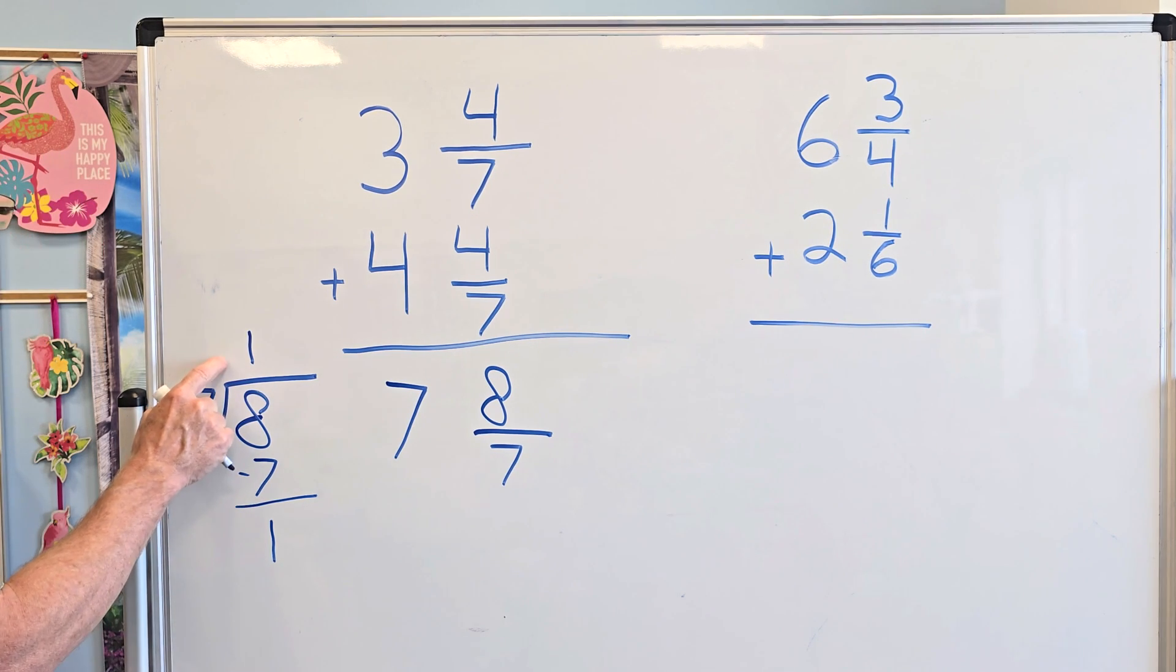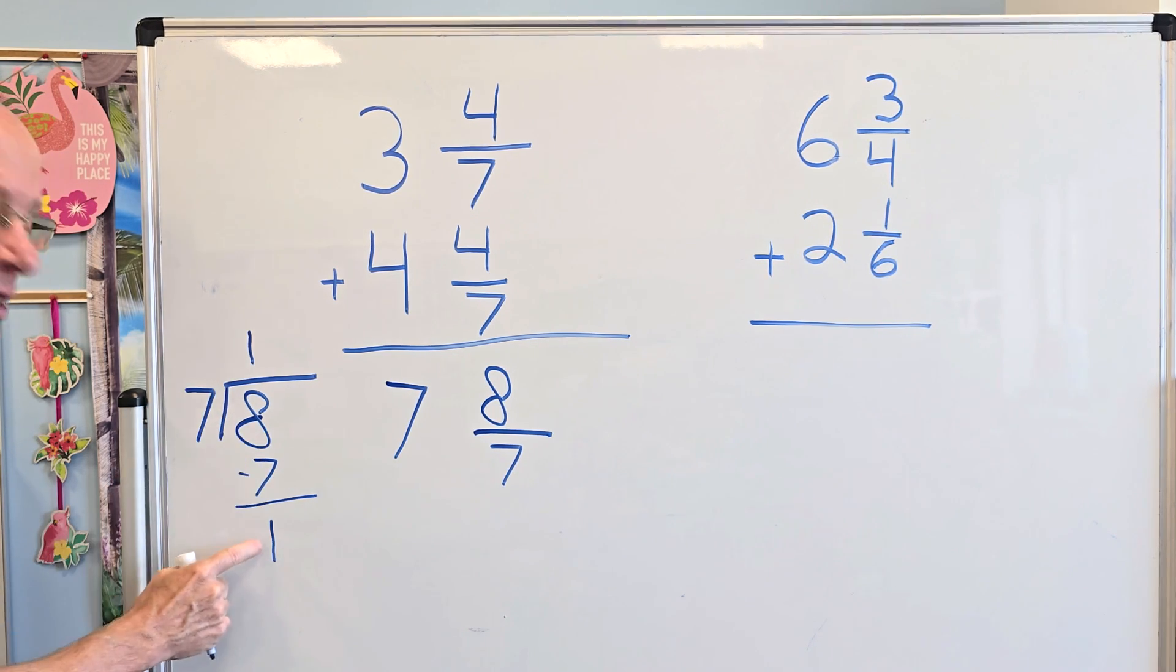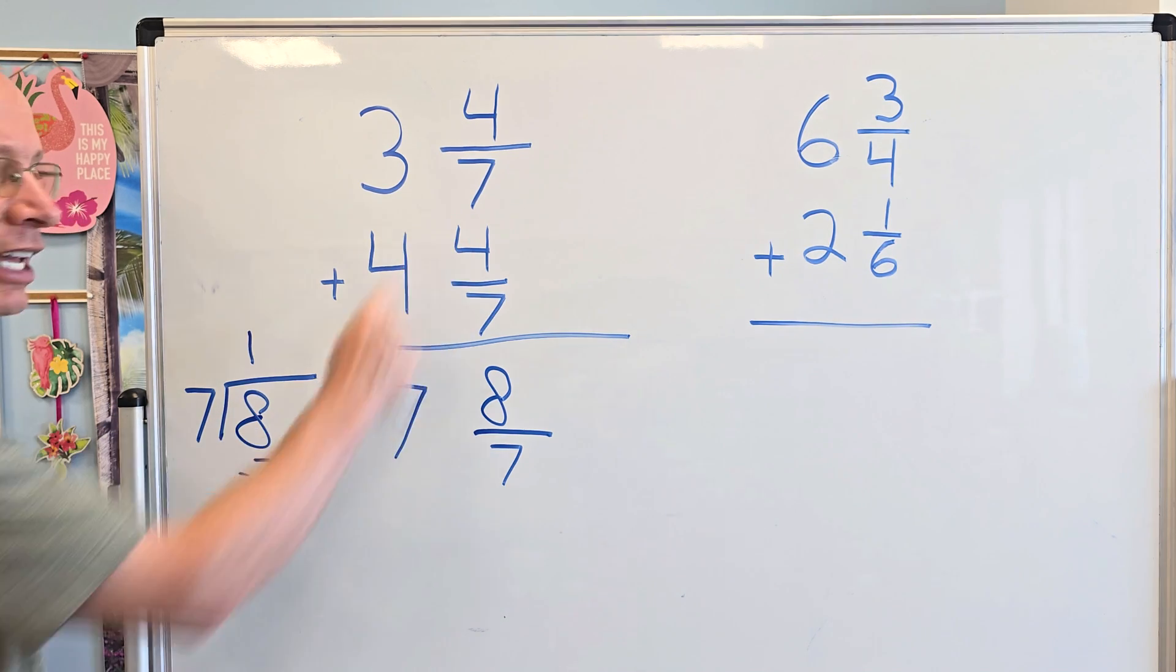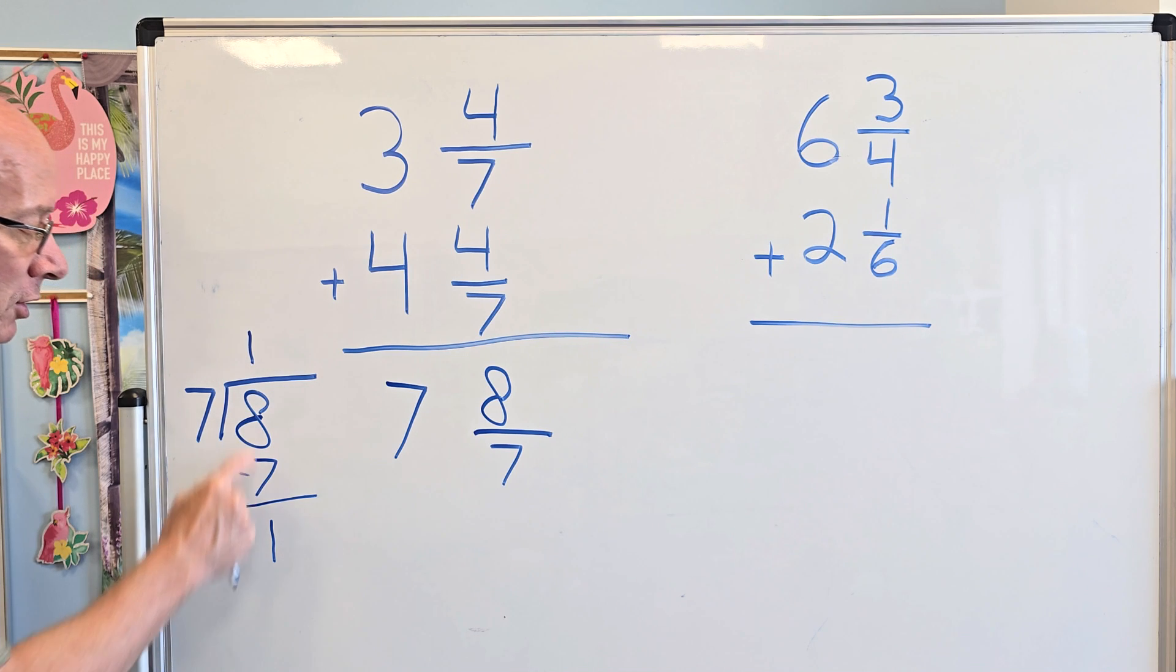So I put 1 right here, and then 1 times 7 is 7, and then I have a remainder of 1. This right here is my whole number. This is going to be my numerator, and this is going to be my denominator. It always has to keep the same denominator. So this is 1 and 1 seventh.